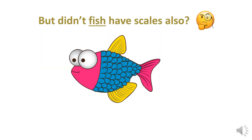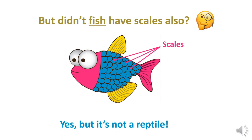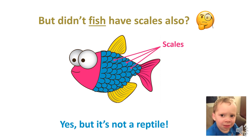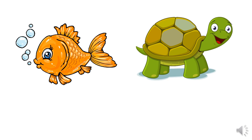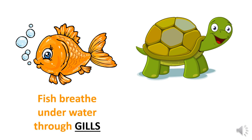Now, didn't fish also have scales? We learned about the fish — yes, it has scales, but it's not a reptile, it's a fish. Don't be confused — I will explain. Can you remember how the fish breathes underwater? What does the fish have? These are called gills. The fish lives underwater and breathes through gills.